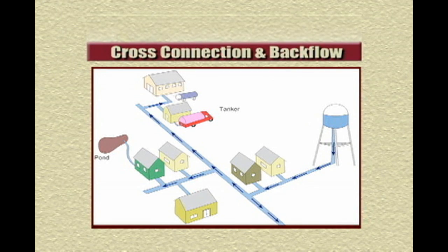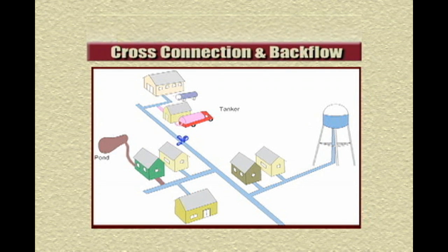Pressurized water systems typically flow from high to low pressure, such as a water main toward a home or a business. During water main breaks, mainline pressure is reduced significantly and may approach atmospheric conditions. When this occurs, water from homes and businesses — or in this case, the tanker and the pond — flows back toward the main.